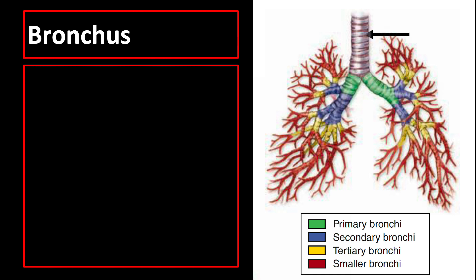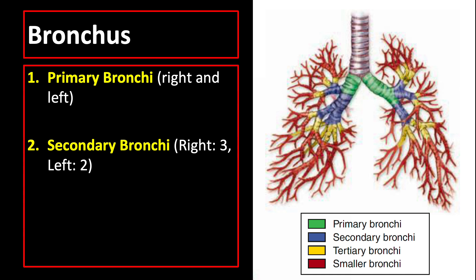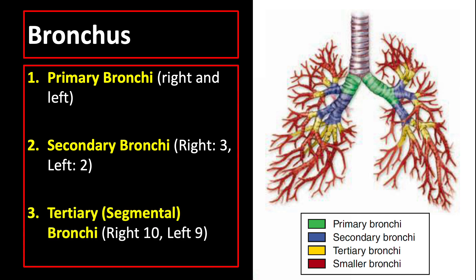The next structures are the bronchi and bronchioles. The trachea branches into the right and left primary bronchi. The right primary bronchus divides into three secondary bronchi and the left into two. On the right there are 10 tertiary bronchi, and on the left there are 9, followed by smaller bronchi and bronchioles.